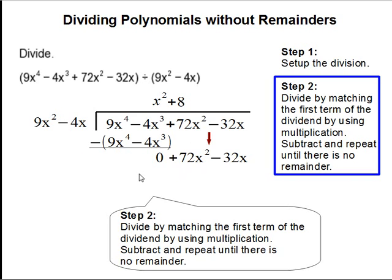So 8 times 9x² gets you 72x². Then 8 times -4, that gets you -32x.